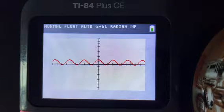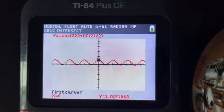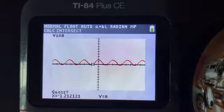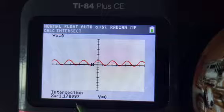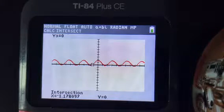So when you get your graph done you'll hit second trace and then 5 which is for intersect and you'll go to the first intersection on the left. Doesn't matter which side, just choosing the left, and you click enter 3 times and you'll get negative 1.178. That number is important to remember.